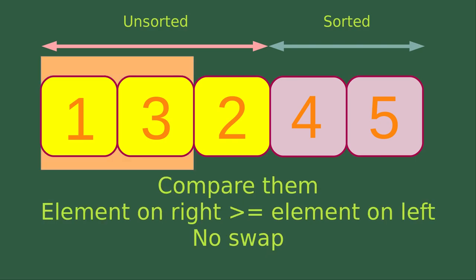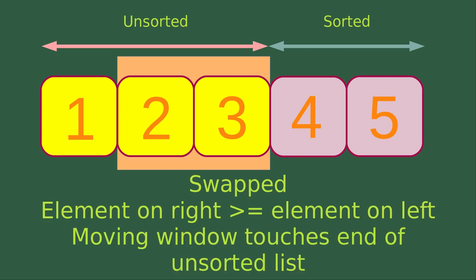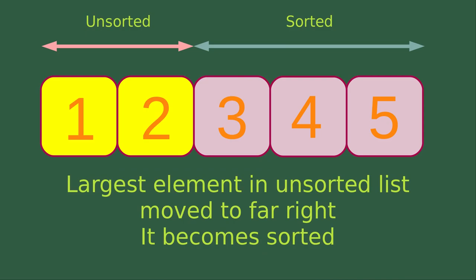I start with the two elements on the far left-hand side of the unsorted list and compare them. The element on the right-hand side is larger than or equal to the element on the left-hand side, so no swap is needed. I move the window to the next two adjacent elements and swap them because the element on the right-hand side is smaller than the element on the left-hand side. The moving window now touches the end of the unsorted list. The largest element, number 3, is already moved to the far right and is now sorted.